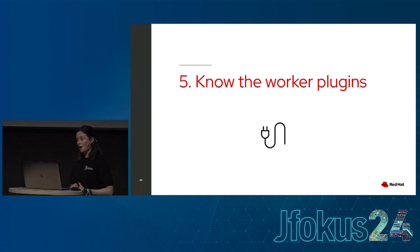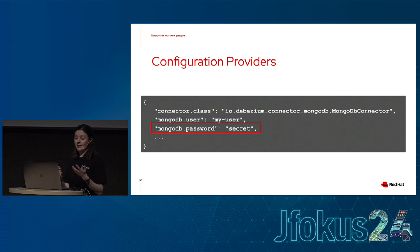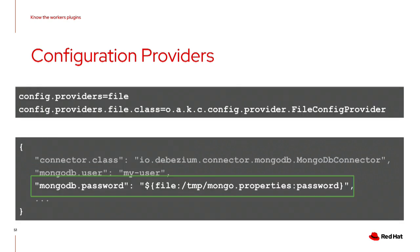Tip number five: know the worker plugins. Connect doesn't just let you configure data pipelines with plugins — it also lets you impact the way the runtime works. The first is configuration providers, which you should definitely check out if you care about security. If you've got connector configuration with a username and password, providing those directly to the REST API is insecure — it gets logged in Kafka Connect, and anyone with REST API access can see the password. Configuration providers let you put in an alternative way to fetch that secret information.